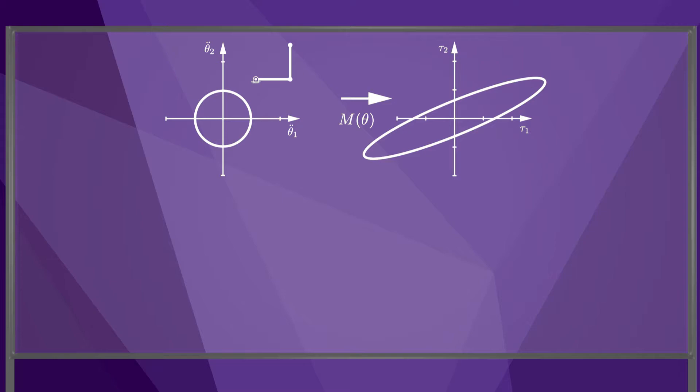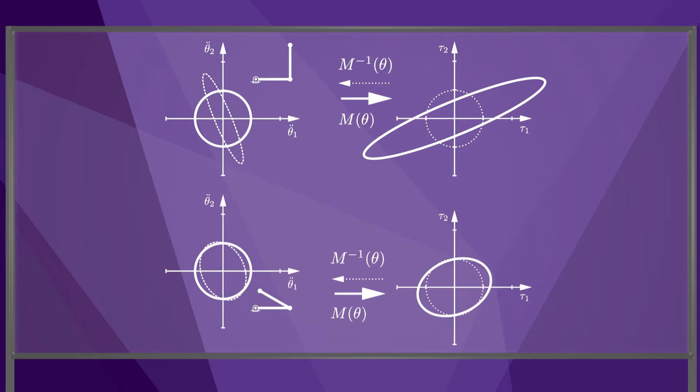If the mass matrix is invertible, then we can also map a circle of joint torques to an ellipse of joint accelerations. If we change the configuration of the robot, the shapes of these ellipses changes.